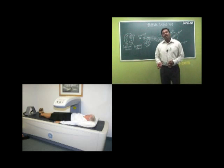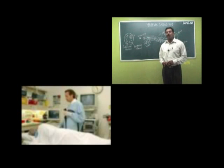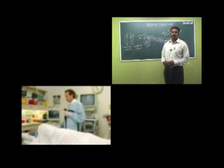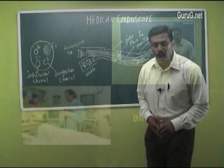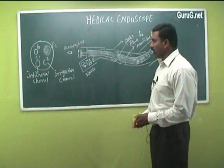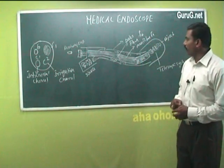If there are any defects in the internal parts or internal organs inside the human body which cannot be seen through our naked eye, then we go for an endoscope. This endoscope gives a clear picture of the internal organs of the human body. This medical endoscope consists of two bundles of optical fibers.